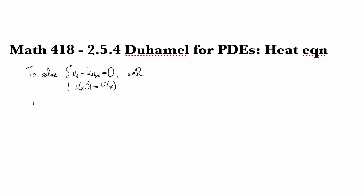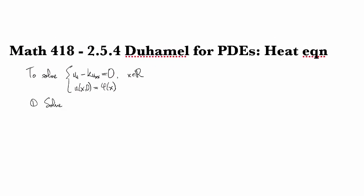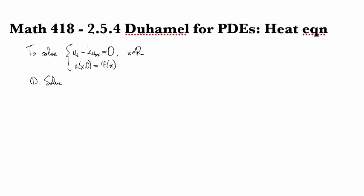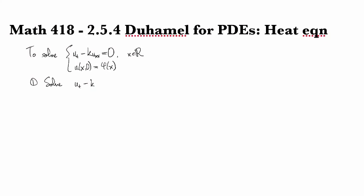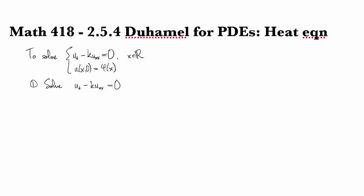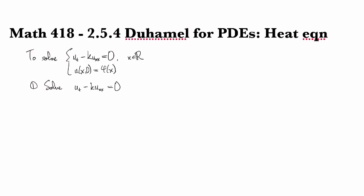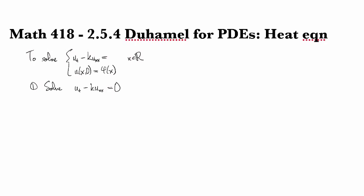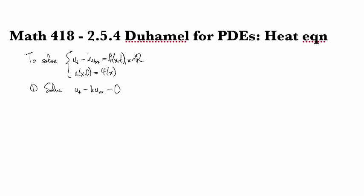Okay, so step number one, solve the problem u_t minus k u_xx equals zero. Oh, I'm sorry, I wrote it wrong. We want to solve the non-homogeneous one.